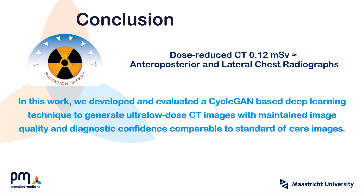Our results show that the cycle GAN model enabled a substantial reduction in radiation dose. The effective dose of the dose-reduced CT is about 0.12 mSv, which is very close to anterior, posterior, and lateral chest radiographs. In this work, we developed and evaluated a cycle GAN-based deep learning technique to generate ultra-low-dose CT images with maintained image quality and diagnostic confidence comparable to standard-care images.